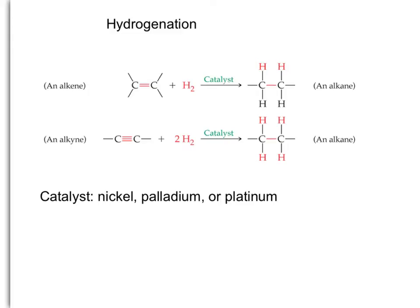The reaction of hydrogenation is used commercially to convert unsaturated oils into saturated or partially hydrogenated fats. In this case, the oils contain multiple double bonds, and they are converted into margarines or cooking fats. It is important to understand that this reaction of hydrogenation will not take place without the presence of a catalyst. Three different catalysts are listed, but only one of them will be needed.